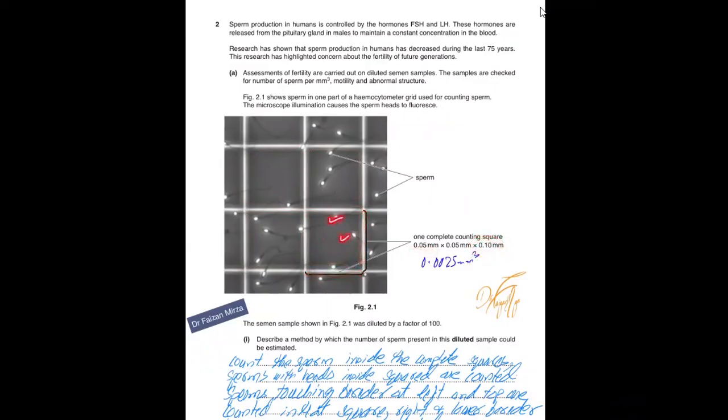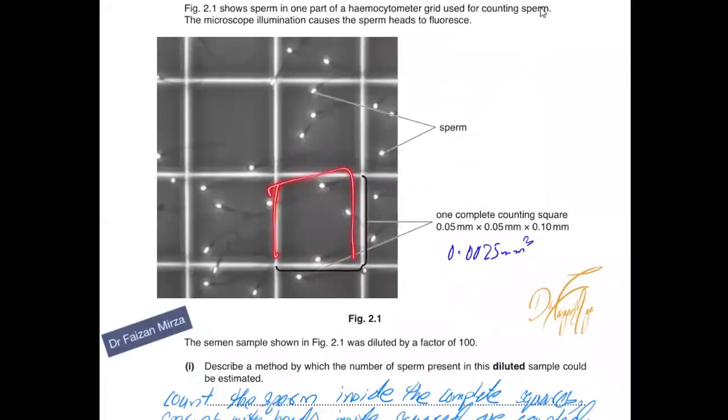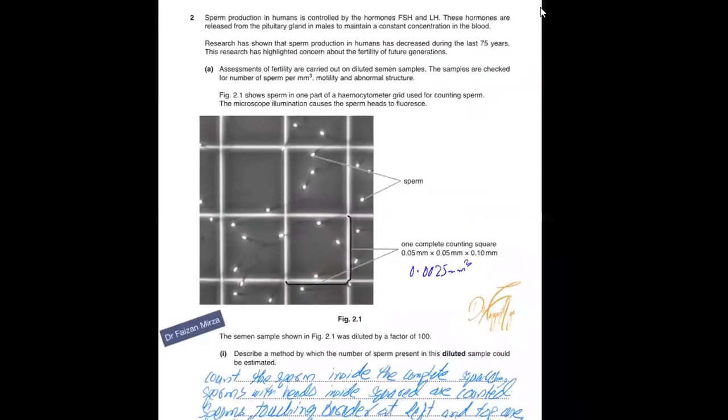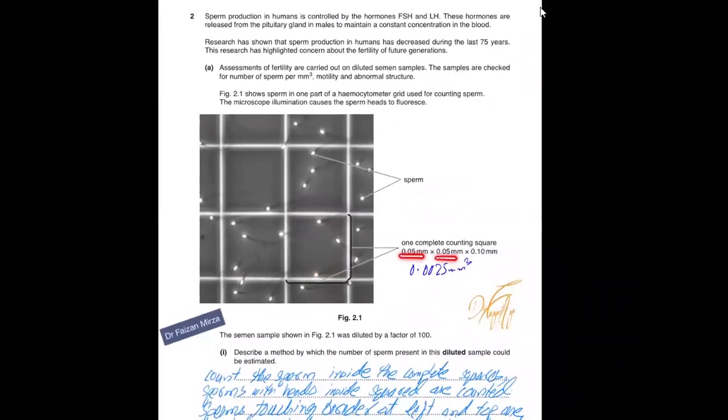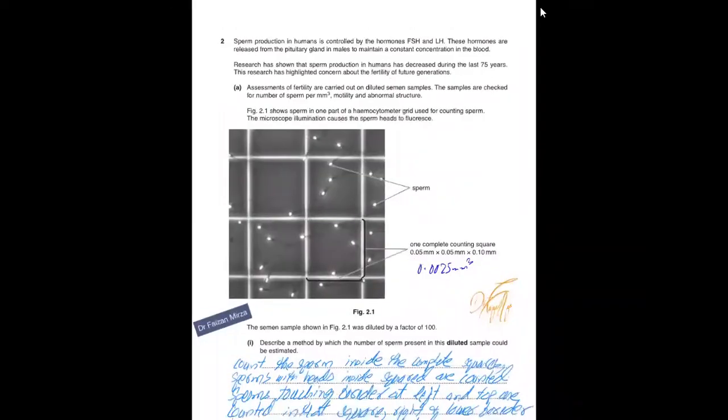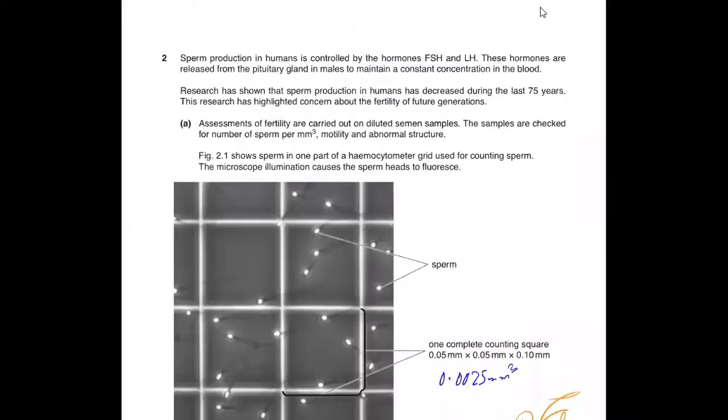If you count the number of cells in one square, you're actually counting cells in 0.0025 mm cube of the liquid sample. This is how you calculate the volume of this grid by multiplying the length and width with the depth. You get the volume in mm cube. I'll be discussing this question and the counting rules to keep in mind.